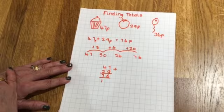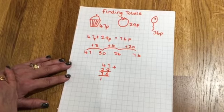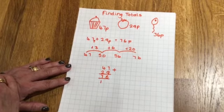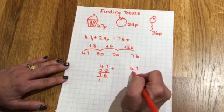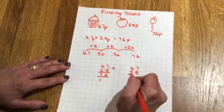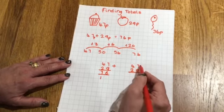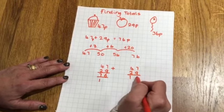The other way of doing it is using the expanded column method that we've looked at in class and you might find this a little bit easier. So let's do 47 add 29. Now we know that 7 add 9 is 16. Let's write the 16 there.